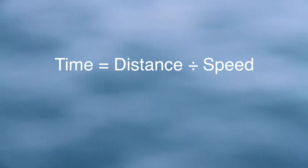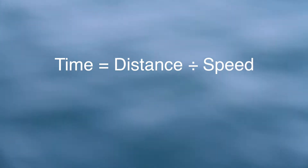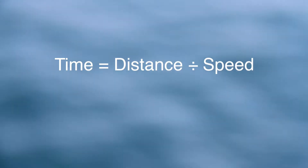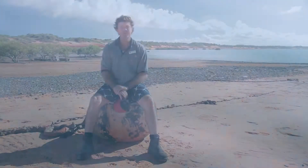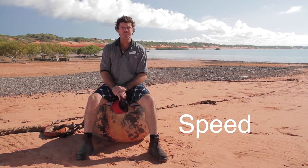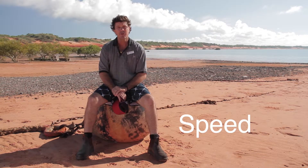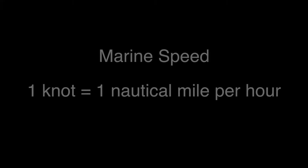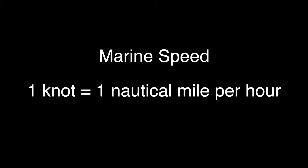Time equals distance divided by speed. We can also work out an average speed — a boat might be doing 15 knots, 12 knots, 20 knots. Marine speed: one knot is one nautical mile per hour. For example, ten miles in one hour is ten knots.